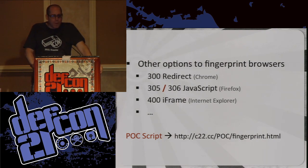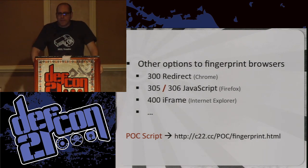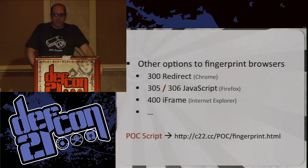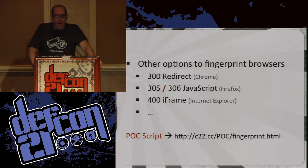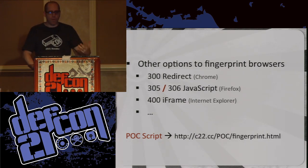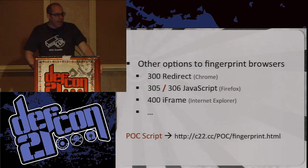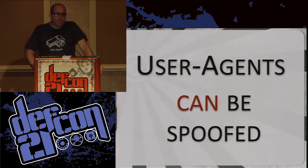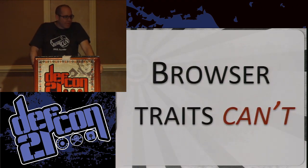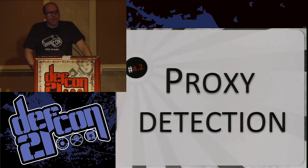There are various other options for fingerprinting. The specific option I selected was kind of the easiest. There's a 300 redirect, there's a 400 iframe on Internet Explorer. If you want to look at the proof of concept, go to C22.CC proof of concept fingerprint.HTML — it will run the same example that I just ran, you can look at the traffic and the code is available. User agents can be spoofed — even script kiddies know that. But browser traits are really hard to fake because your browser responds and does things in specific ways.